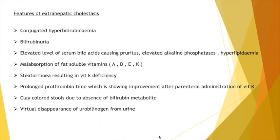The features of extrahepatic cholestasis include conjugated hyperbilirubinemia, bilirubinuria, elevated serum bile acids causing pruritus, elevated alkaline phosphatases, and hyperlipidemia. Additionally, there will be malabsorption of fat-soluble vitamins, which are vitamins A, D, E, and K.